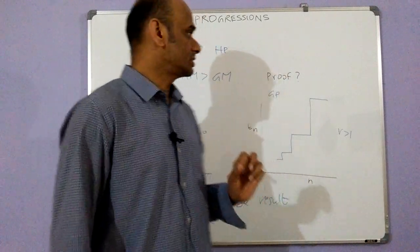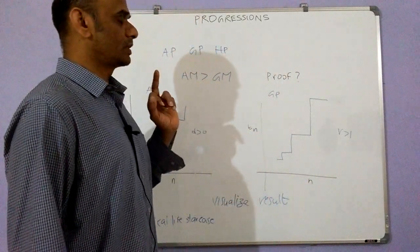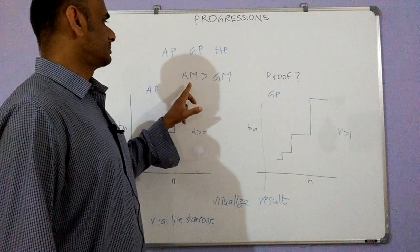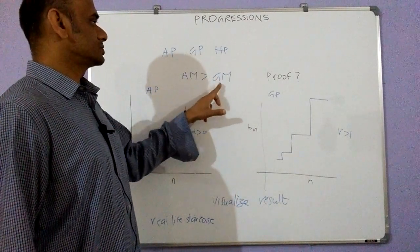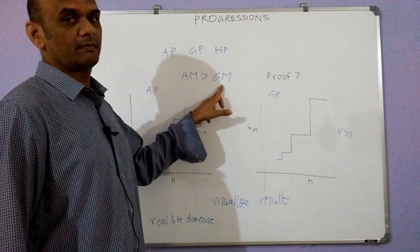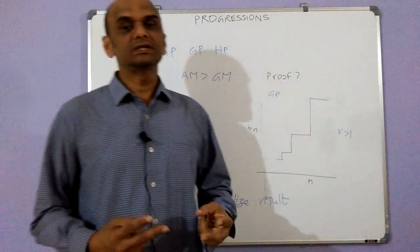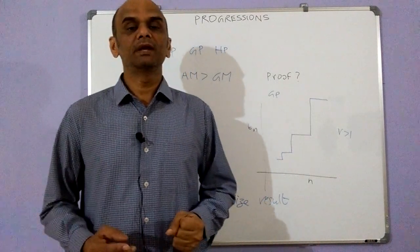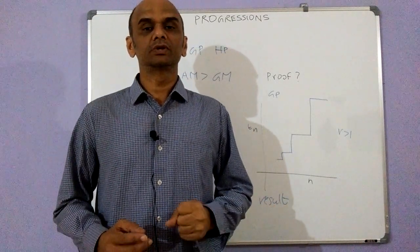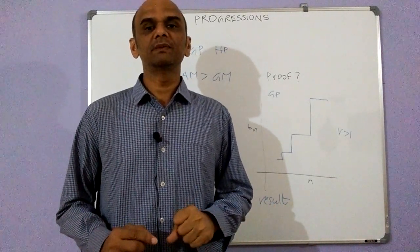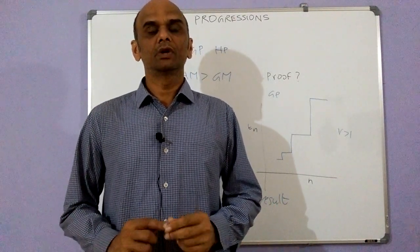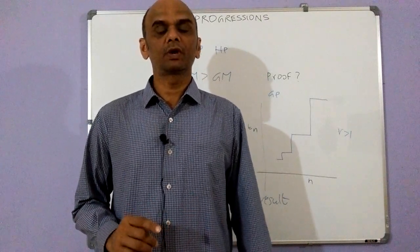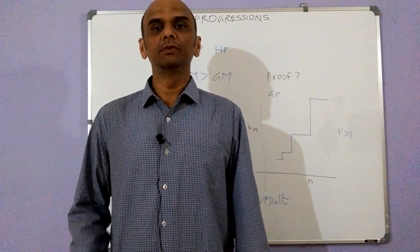There is one interesting result about arithmetic and geometric progression, which is that arithmetic mean is greater than geometric mean. If we have two numbers a and b, then the arithmetic mean between those two numbers is (a + b) / 2, and the geometric mean between those two numbers is the square root of ab.